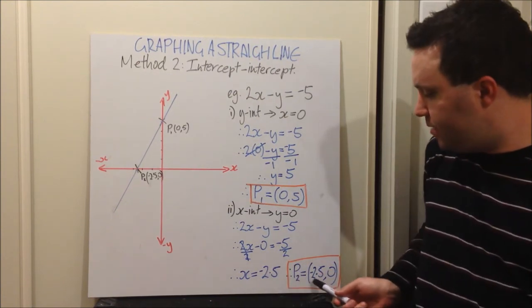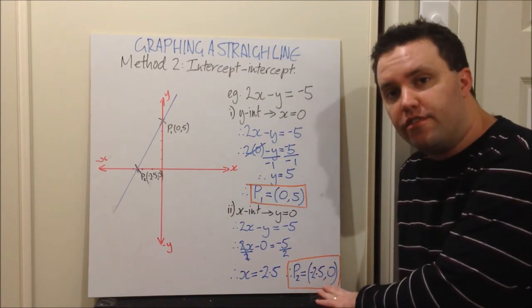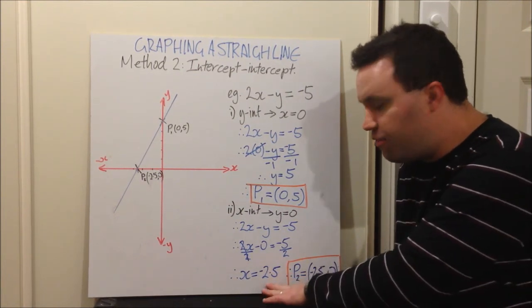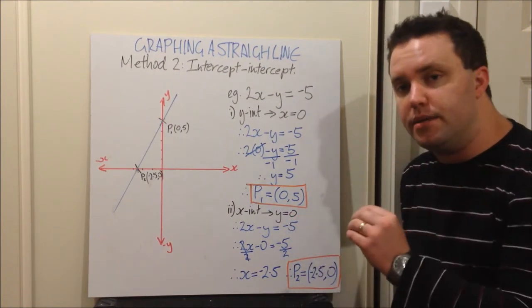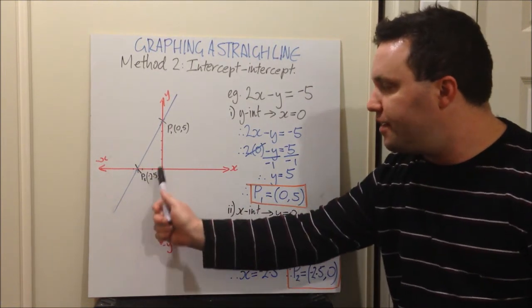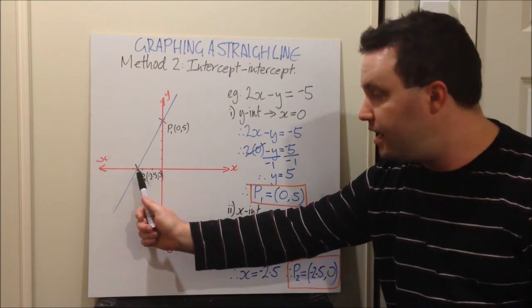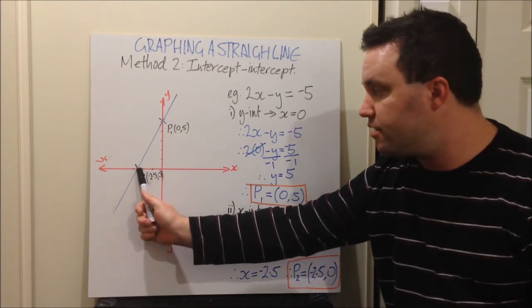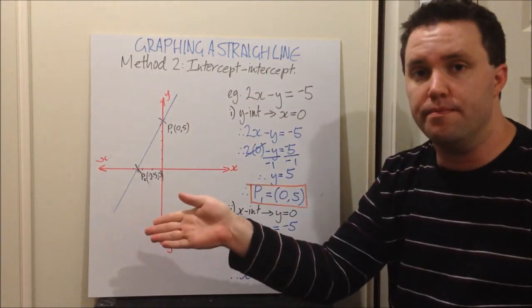Straight away write down, point number 2 is equal to negative 2.5 comma 0. My x value is negative 2.5, my y value is 0 because I set it to being 0. You found point 2, come straight over here, find it. Going across to the negative 2.5 on the x axis and 0, so it stays on the line, make a cross. As soon as you've got two points, you can draw your line.